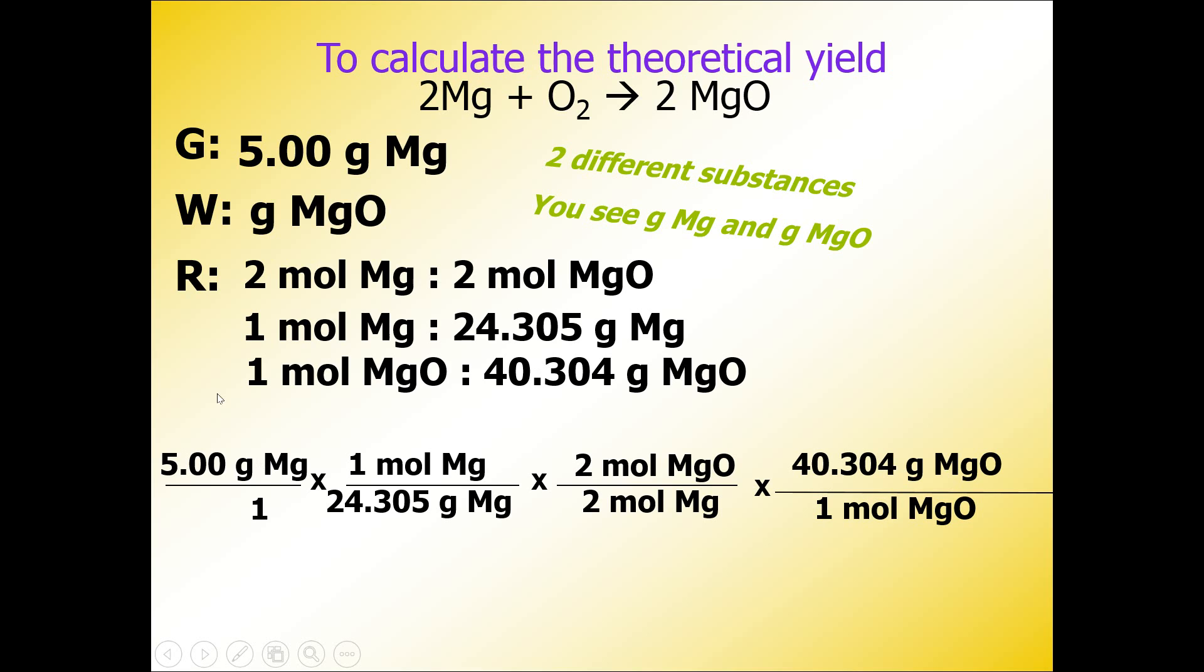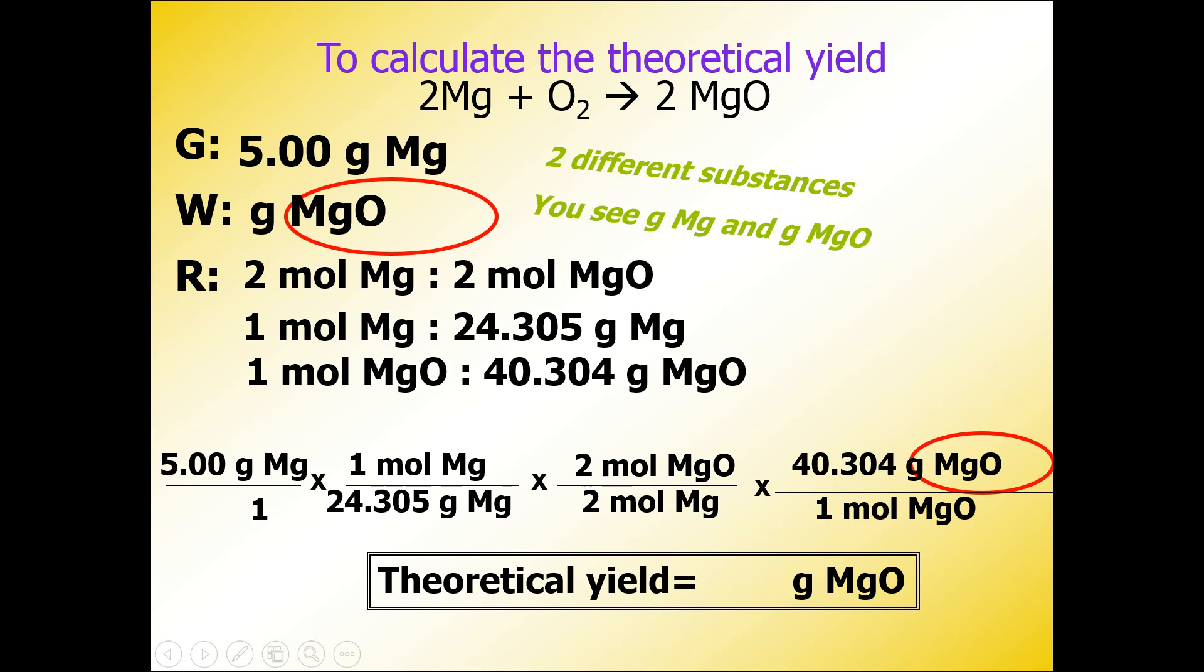When we type this into the calculator, I'm going to go from left to right, although you could do all the tops divided by all the bottoms. You can do 5 divided by 24.305 times 2 divided by 2 times 40.304. Our final unit should be grams of magnesium oxide because that's the only unit that doesn't cancel out.